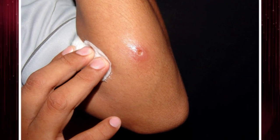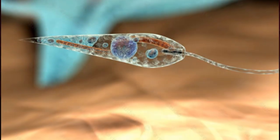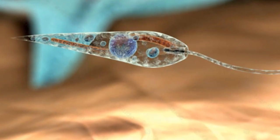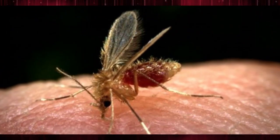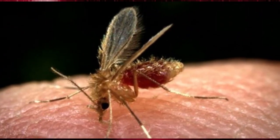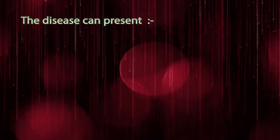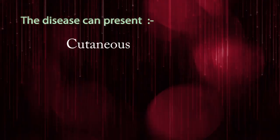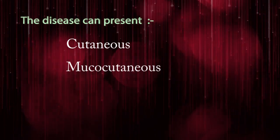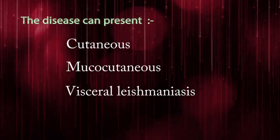Leishmaniasis is a disease caused by parasites of the Leishmania type. It is spread by the bite of certain types of sand flies. The disease can present in three main ways: as cutaneous, mucocutaneous, or visceral Leishmaniasis.